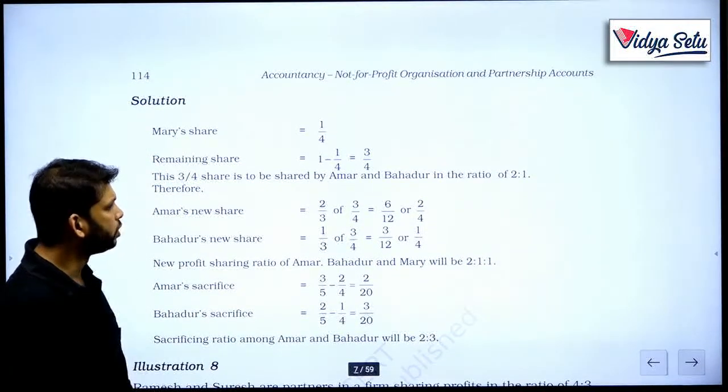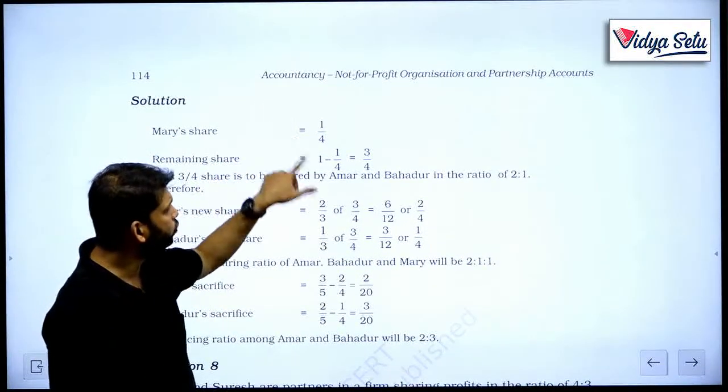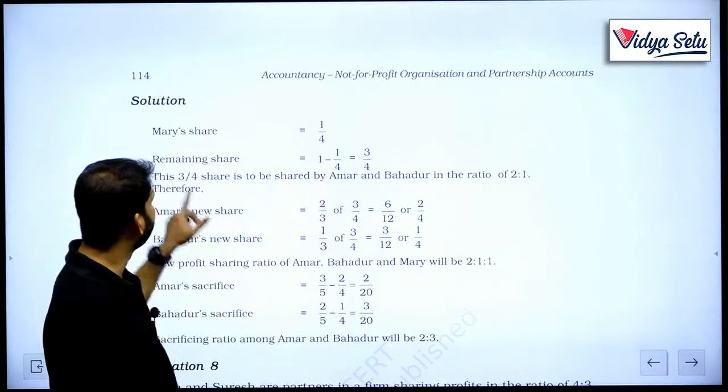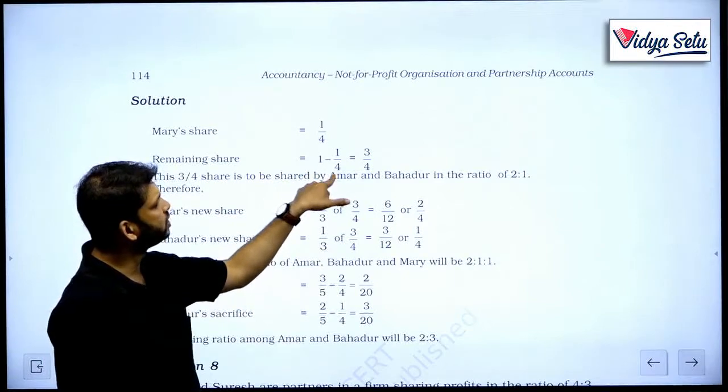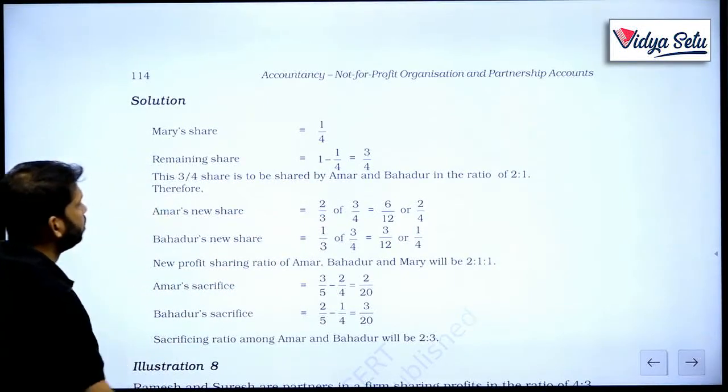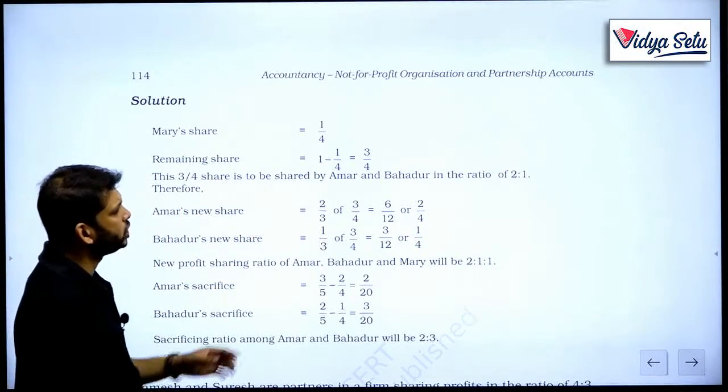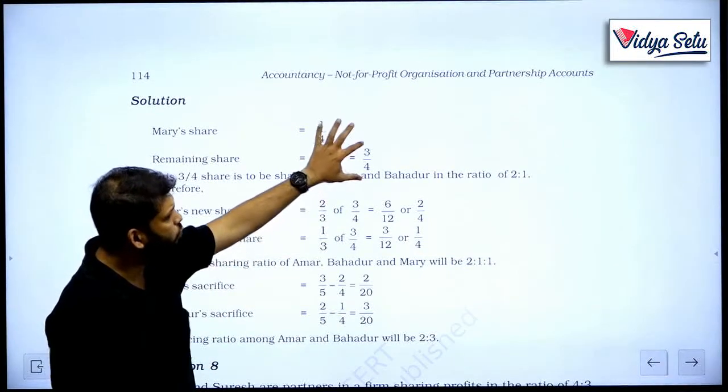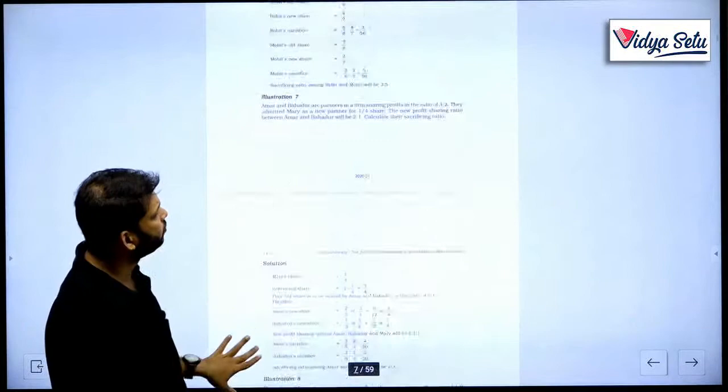Mary's share was 1 upon 4. So if out of total profit 1, 1 upon 4 is taken by Mary, so how much is remaining for others? 1 minus 1 upon 4, 3 upon 4. Now this 3 upon 4 share is to be shared by Amar and Bahadur in the ratio 2 is to 1.